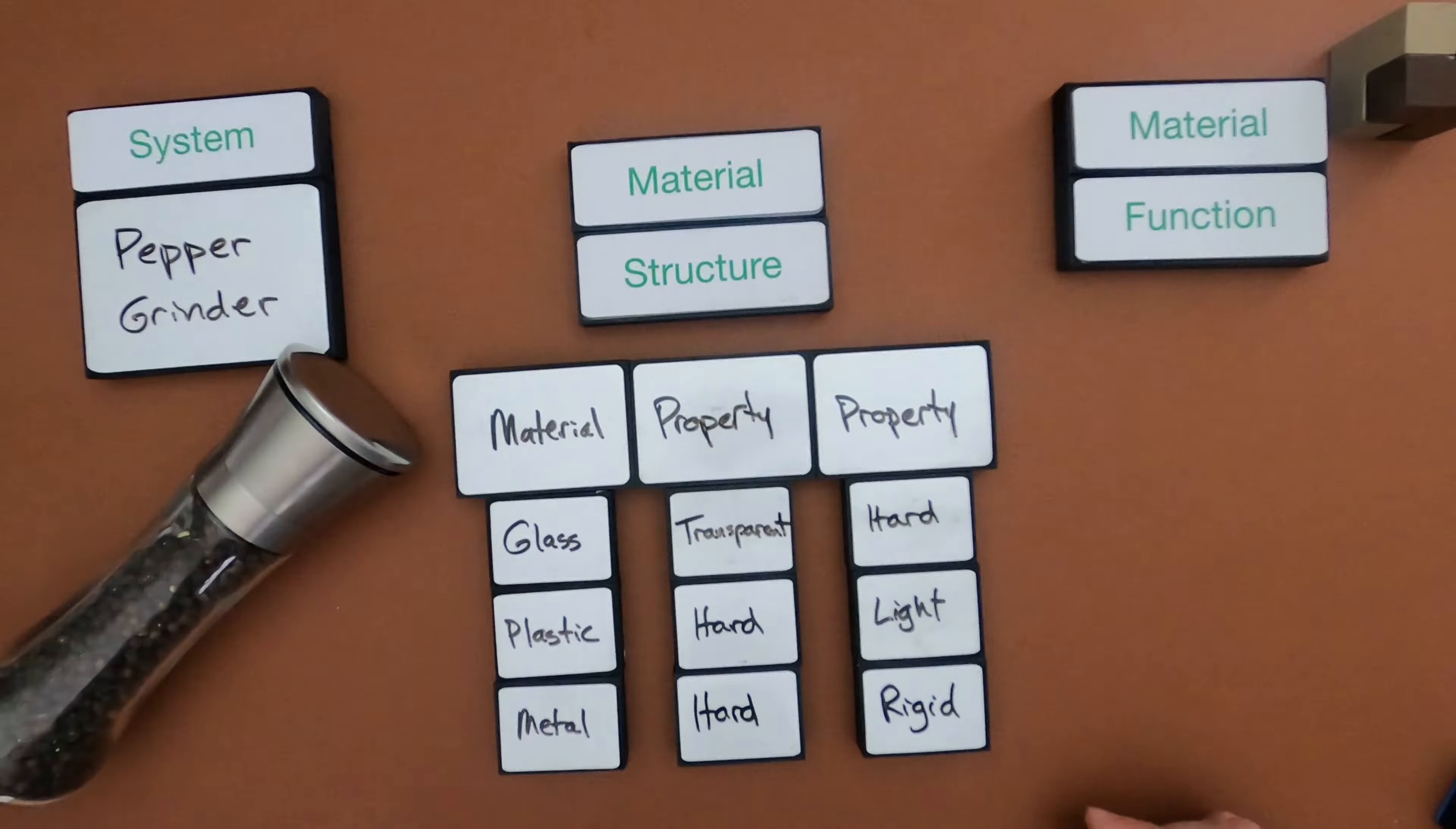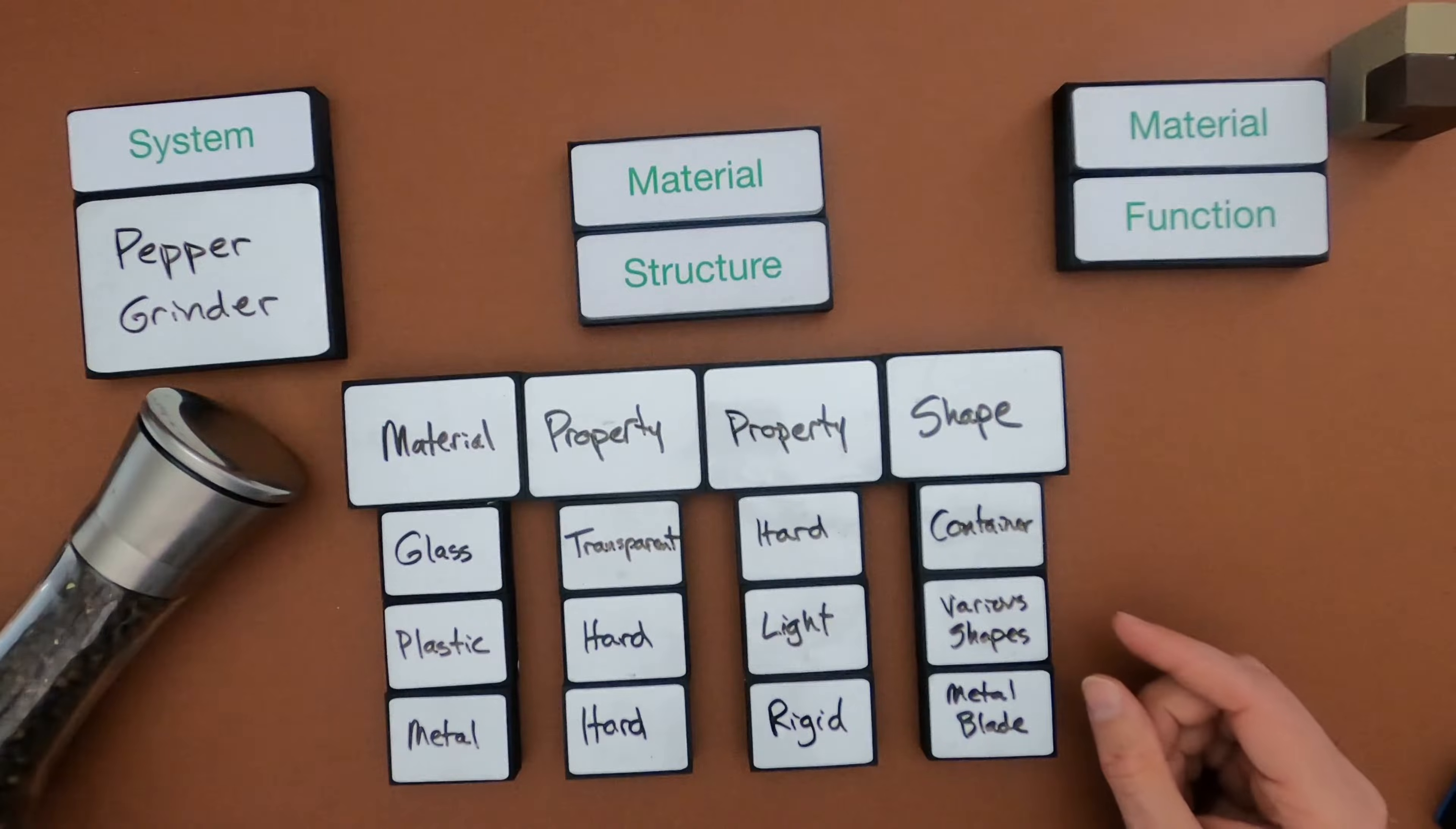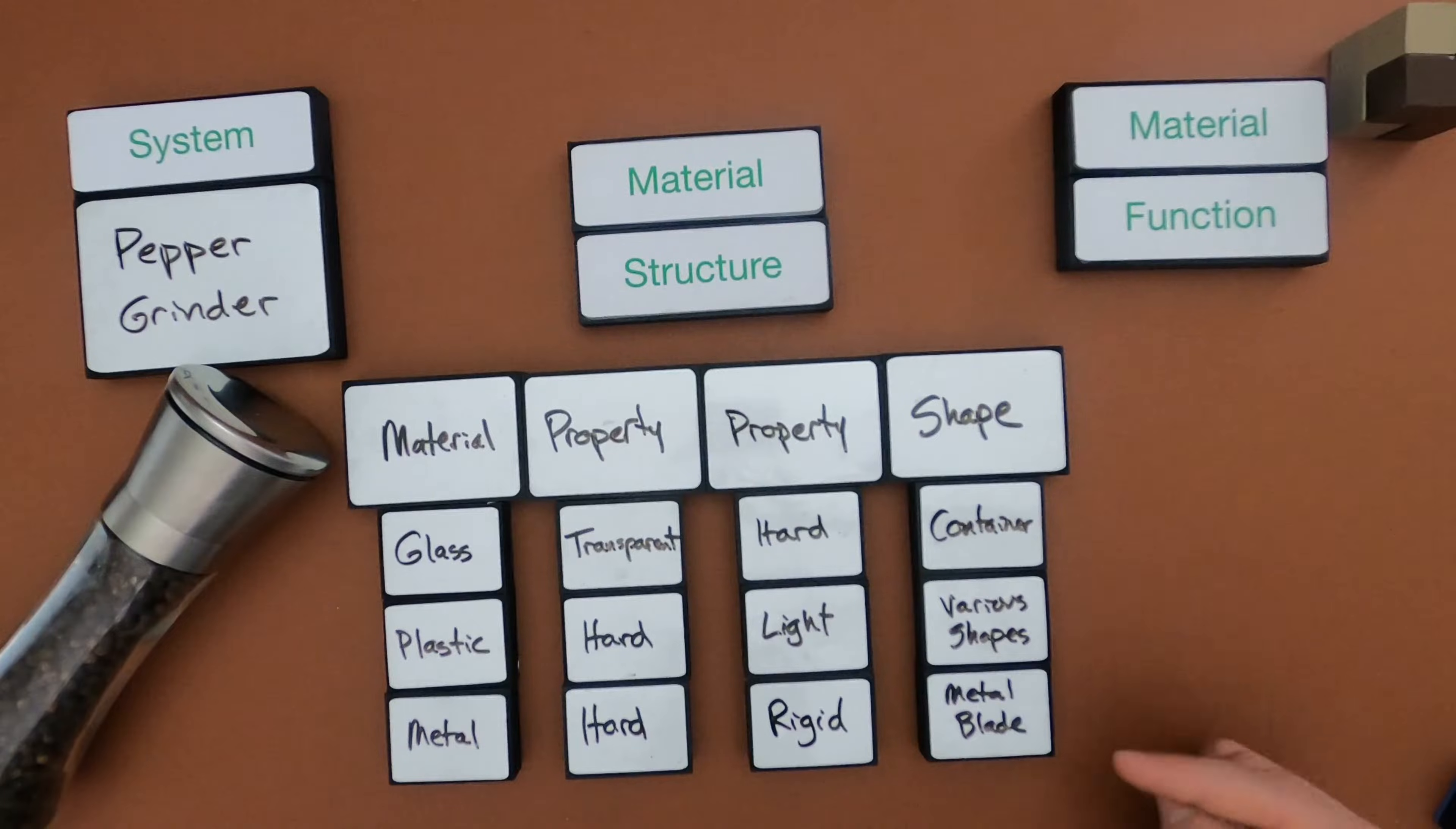Next thing I would think about is how can they be shaped, or how can they be manufactured? Alrighty, so as far as shapes, the fact that this glass can be molded into a container is important. There's so many plastic pieces as a part of this pepper grinder, the screw, the container here at the top, and so you can make it into various shapes. I'm sure those can be light and also cheap. And then the metal can be sharpened into a blade.